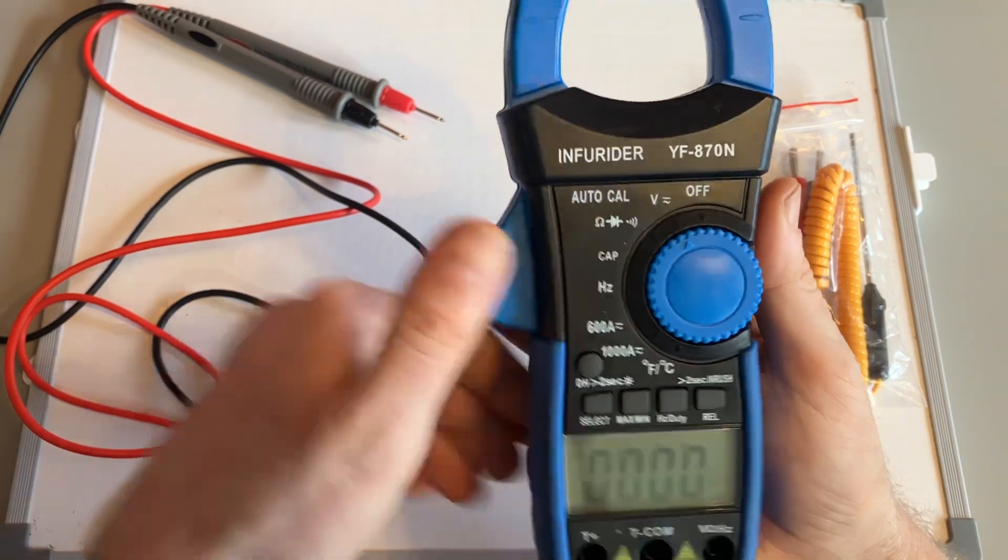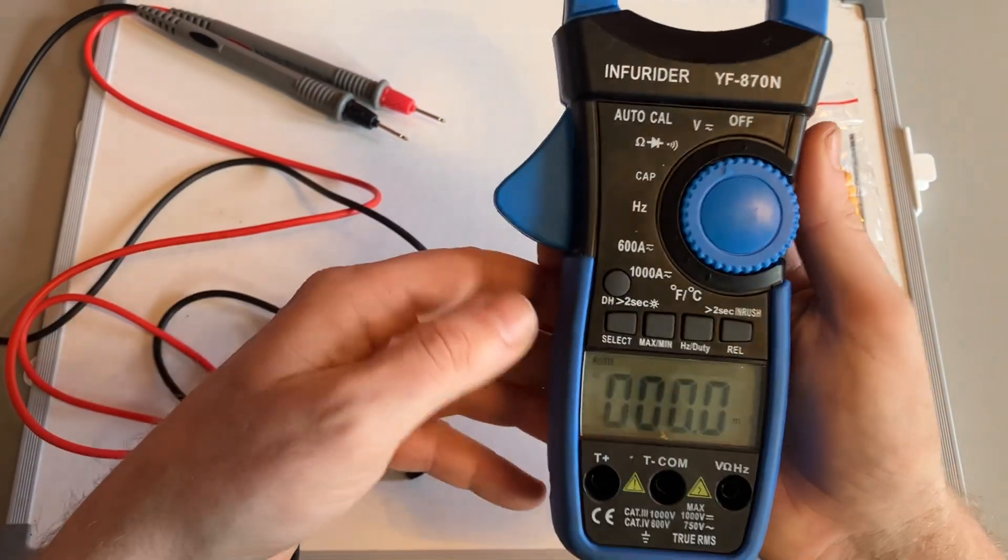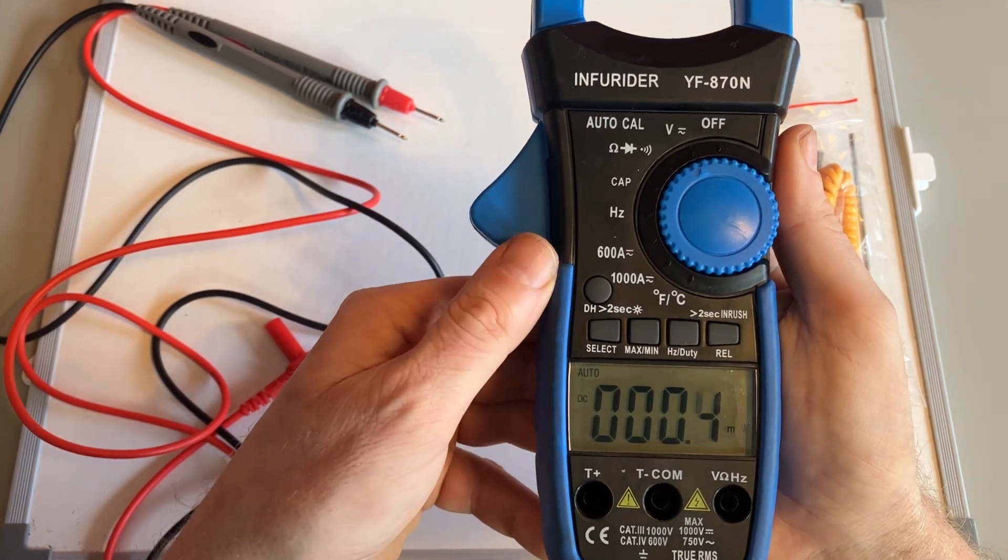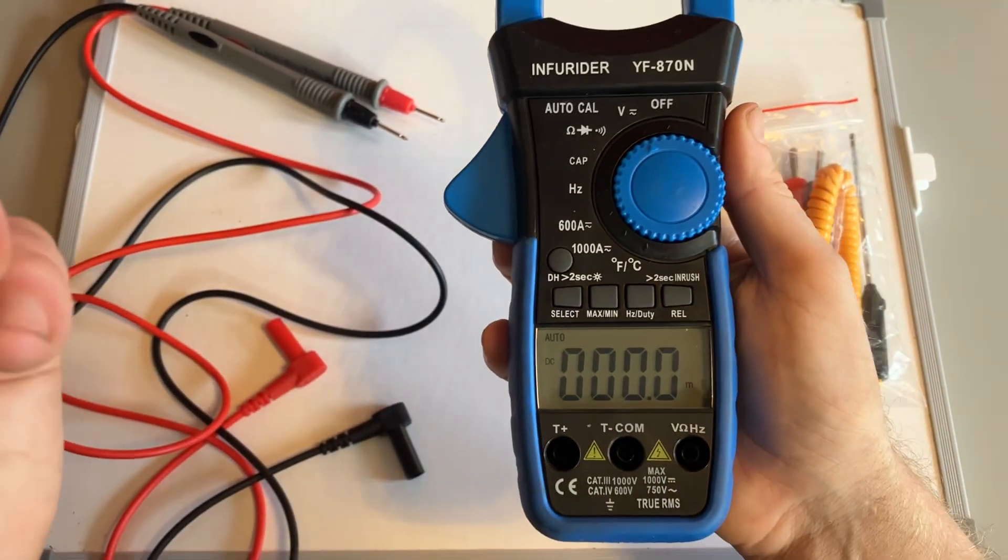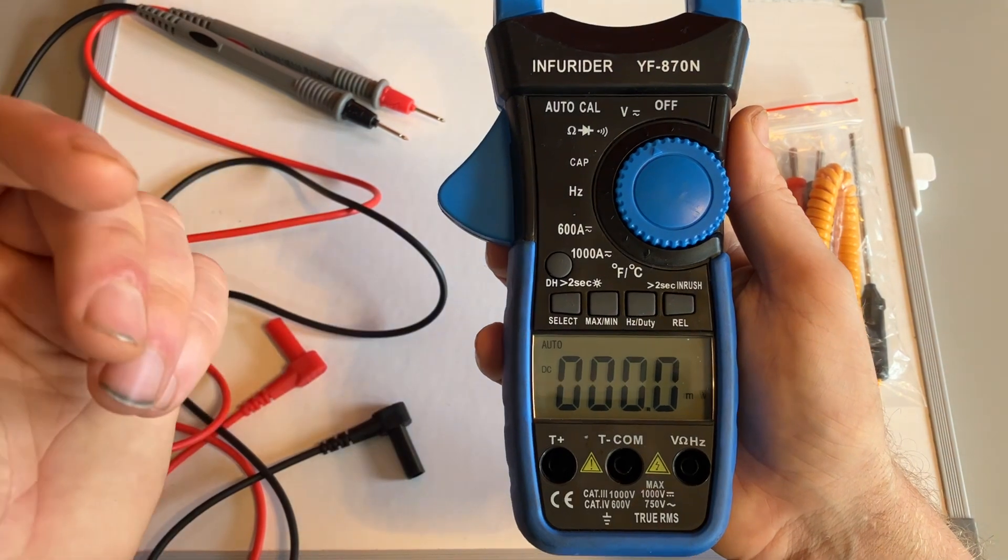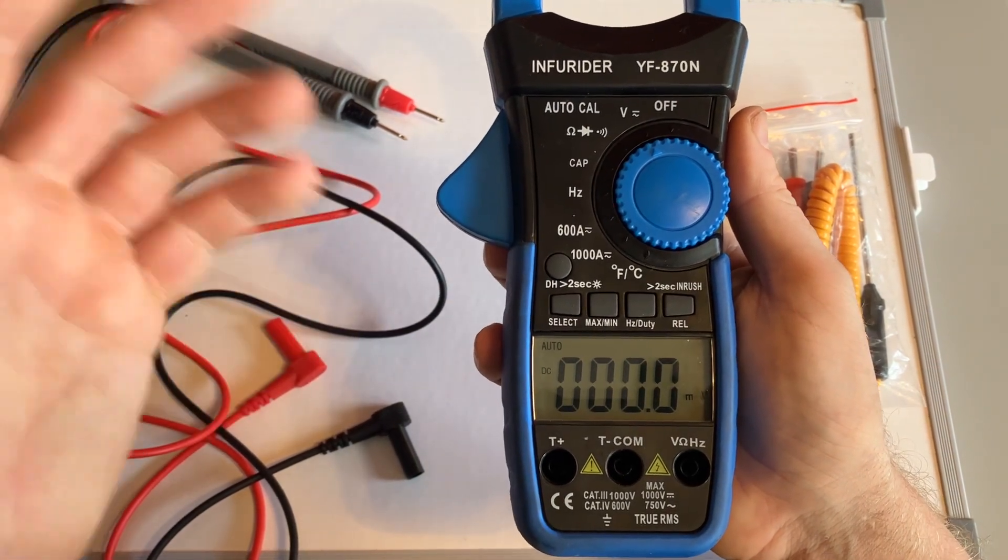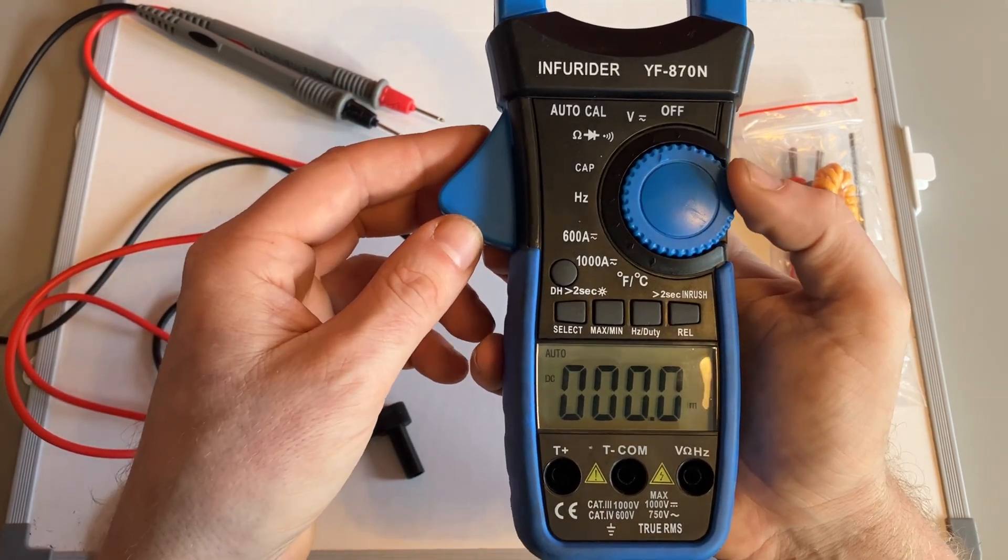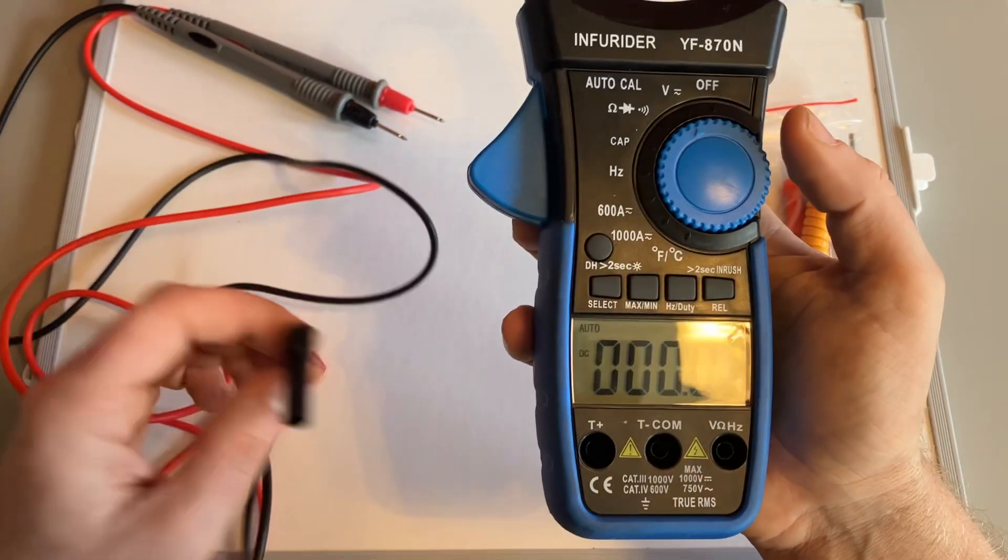So we've got direct current and alternating current. Whichever one you're going to do, that will be the voltage test. To change it we've got AC here and you just press select to move it to DC. So if I was using this effectively as a multimeter to do a voltage test on a car battery or any other component, then that will be the setting to do it on.